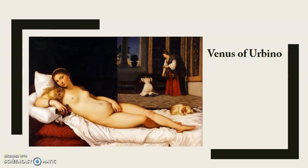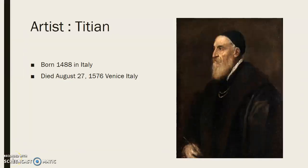The Venus of Urbino was painted by artist Titian. Titian is his English name; his full Italian name is Titiano. He was born in Pieve di Cadore, Italy, and is often nicknamed 'da Cadore' because of that. He died on August 7th, 1576, in Venice, Italy. Another nickname that came after his death was 'the Prince of Painters.'